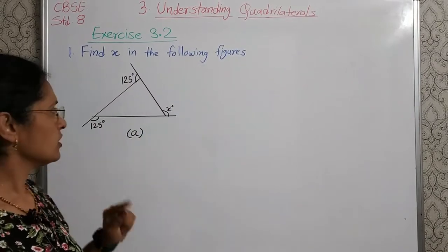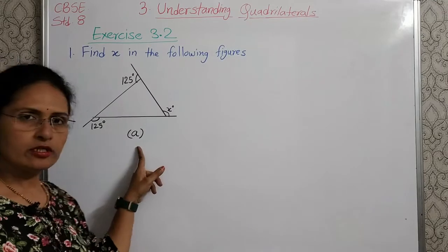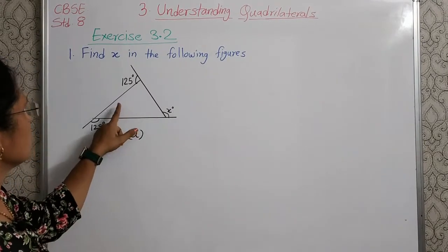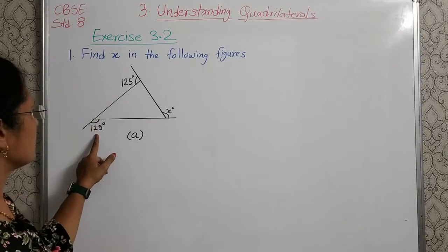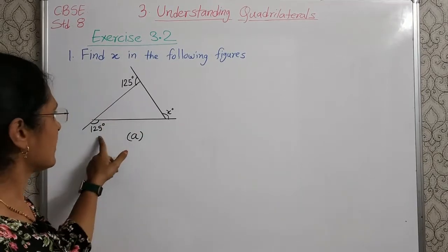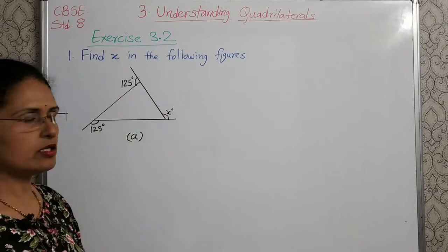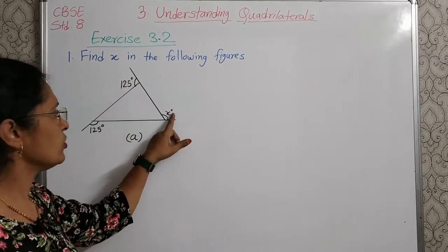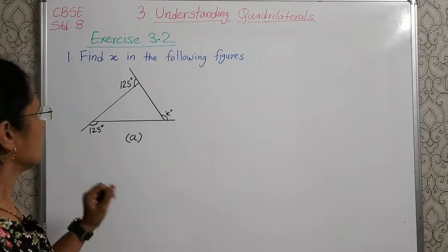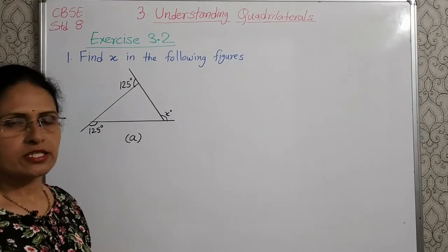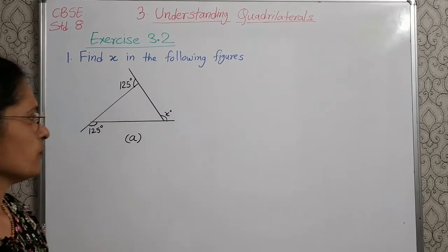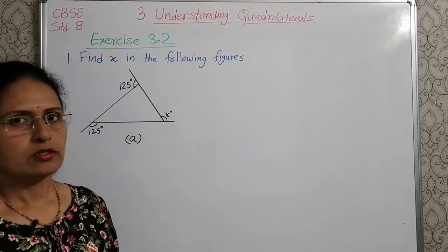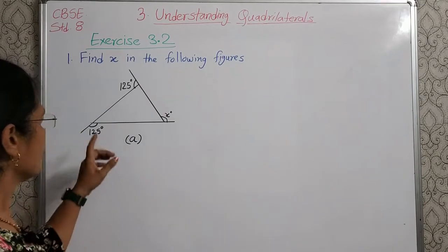Two figures are given in the textbook. I have drawn here the first figure, that is A. The exterior angles are given — two exterior angles of this triangle are given, and one exterior angle which is x is not given. We have to find the value of x. You know the property of exterior angles of a polygon: the sum of the exterior angles of a polygon is 360 degrees.